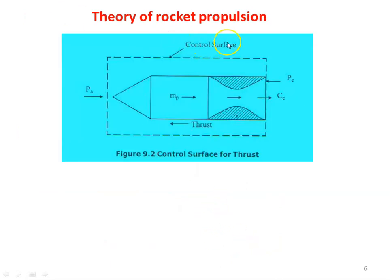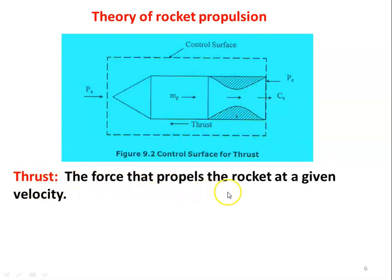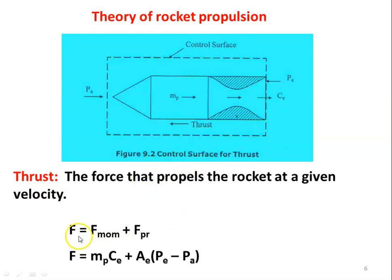The theory of rocket propulsion: the rocket has a control surface with navigational equipment, propellant, thrust chamber, and nozzle. PA is the atmospheric pressure, PE is the exit pressure, CE is the exit velocity, and MP is the mass of the propellant. The thrust is the force that propels the rocket at a given velocity — the force produced by the gas jet. Total thrust equals momentum thrust plus pressure thrust.